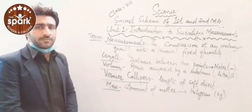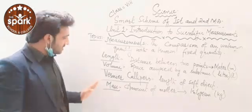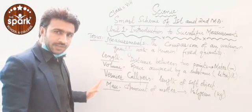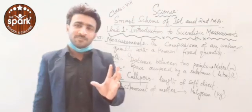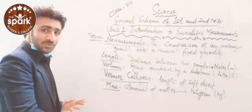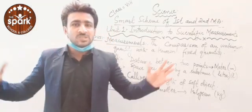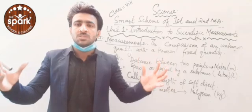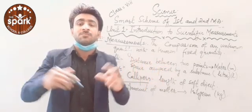Next is the vernier caliper. With this instrument, we also measure length, but we don't use it to measure the length of things like room walls or doors. Instead, we use it to measure the length of a spherical body.